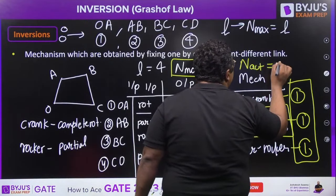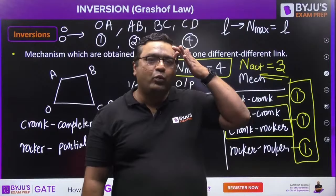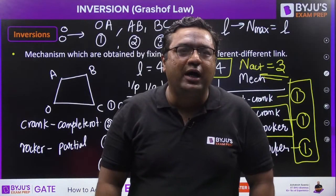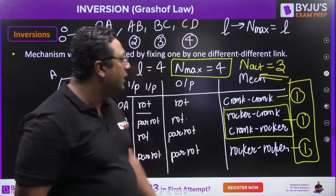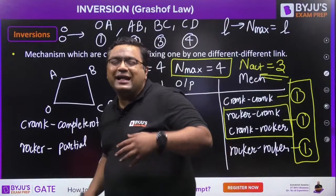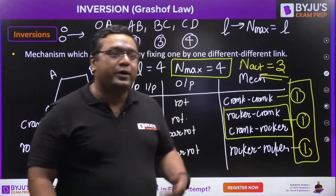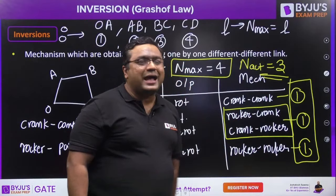Crank-rocker and rocker-crank are actually the same mechanism — just rotating the machine 180° makes the input the output and vice versa, but the relative motion remains the same. So rocker-crank and crank-rocker count as one inversion. Therefore, for a simple four-bar mechanism, we get only three inversions, not four. That is why I said 'maximum' earlier — the actual number for simple four-bar mechanism is three.